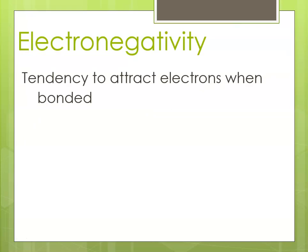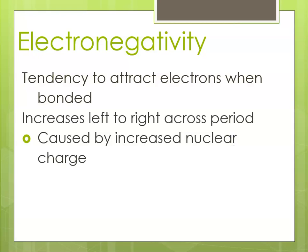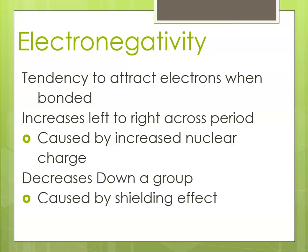Electronegativity is the tendency to attract electrons when bonding. The trend is that electronegativity increases from left to right across a period because of the increased nuclear charge — not only is the nucleus holding its electrons more tightly, but it's actually able to attract another atom's electrons. It decreases down a group from top to bottom because of shielding, as the electrons in the outermost levels are shielded from the nucleus and less likely to be held tightly.